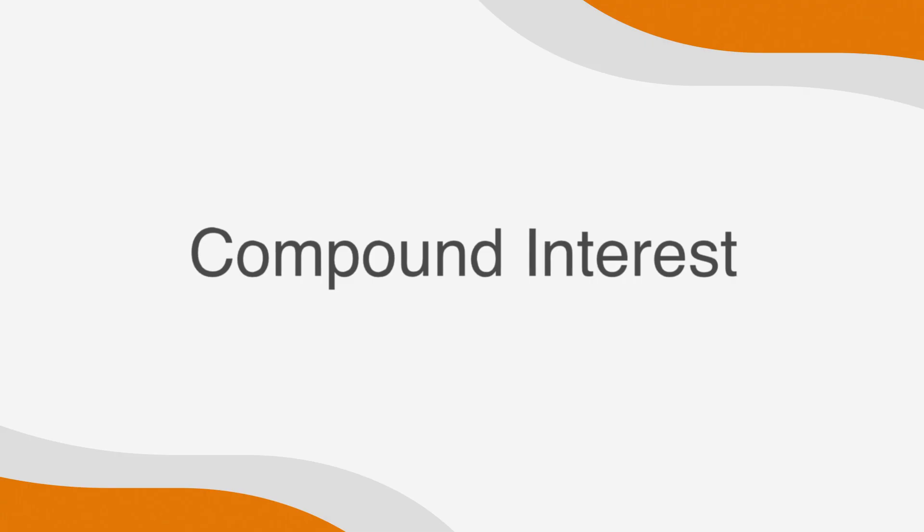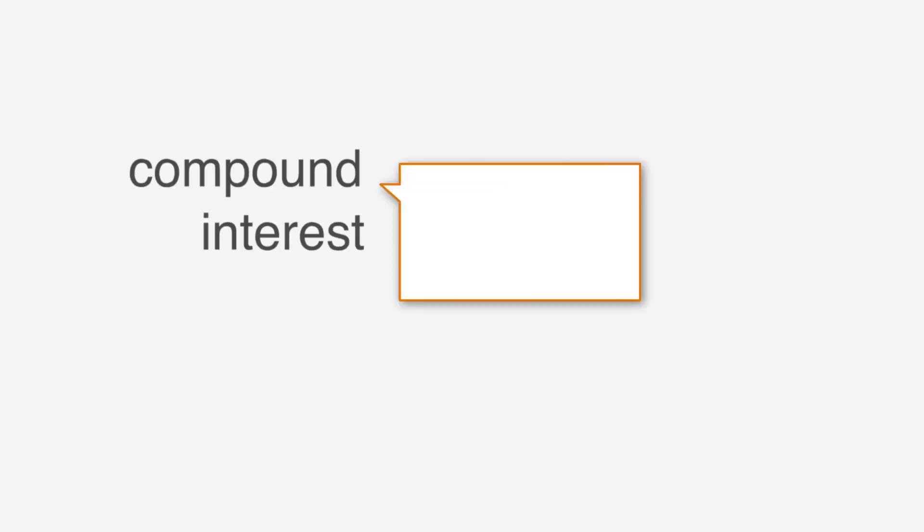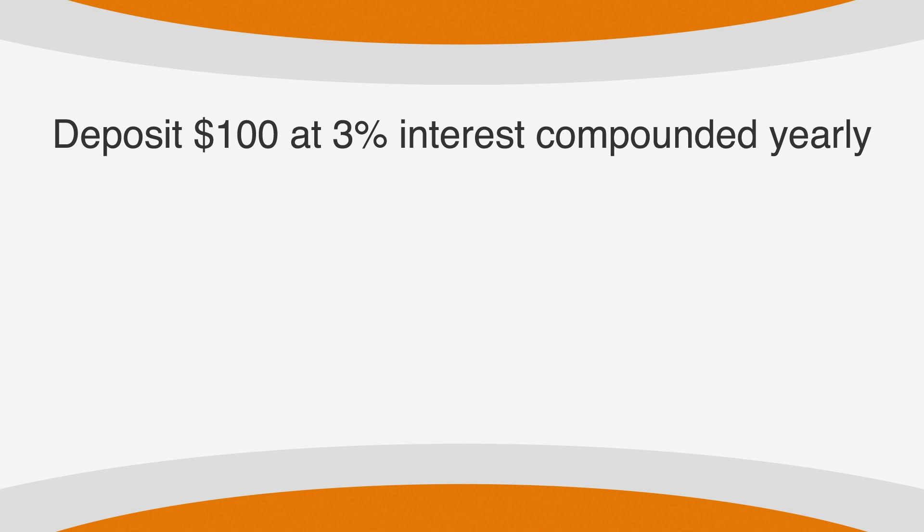But most interest in life and most interest questions on the SAT won't be quite so simple. Instead, you're likely to see compound interest. Compound interest requires the borrower to pay interest not only on the principal, but also on the other interest that has been accumulated. For example, let's say you deposit $100 into your savings account at the bank and get 3% interest compounded yearly. That would mean the first year, you would earn 3% interest on your principal.